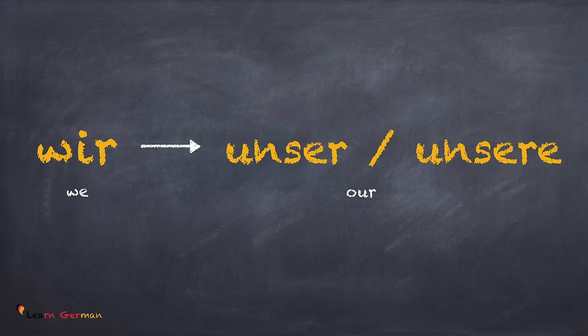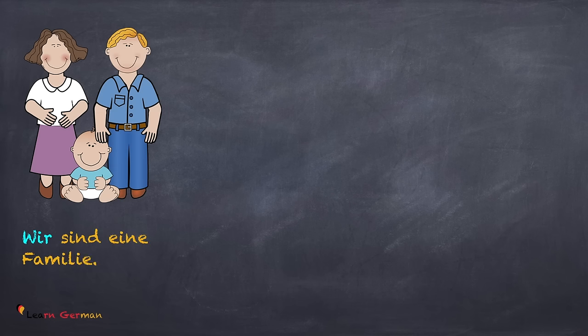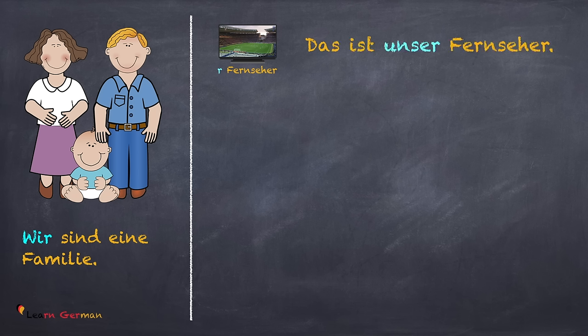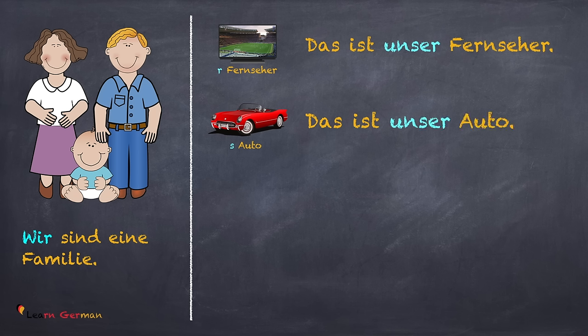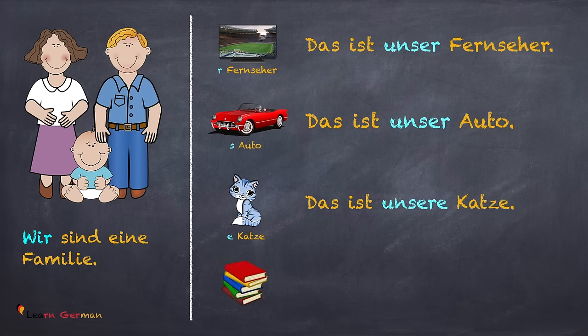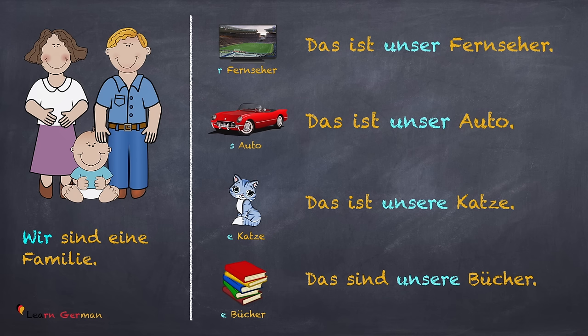Now we come to the pronoun 'wir.' The possessive pronouns for the same are 'unser' or 'unsere.' Wir sind eine Familie. You should remember that when the article is 'der' or 'das,' you would say 'unser,' and when the article is 'die' for feminine or plural, you would say 'unsere.'